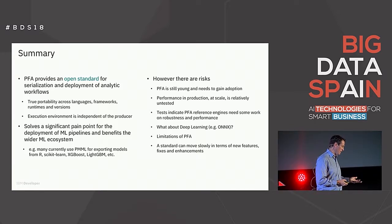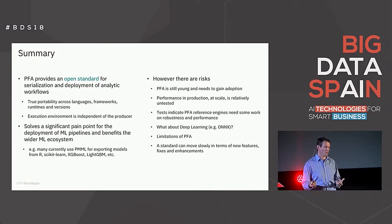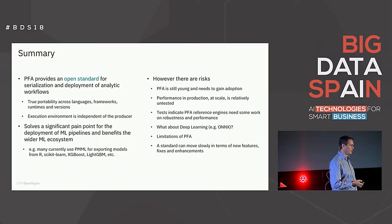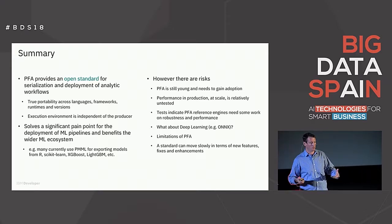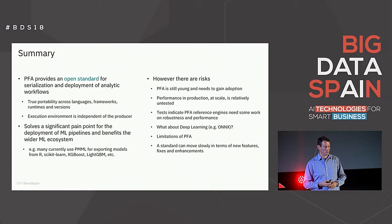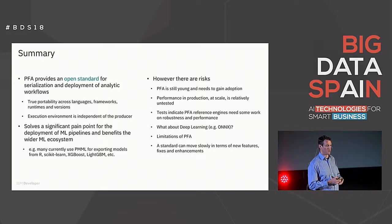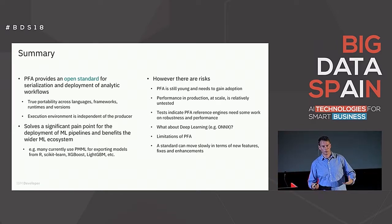In summary, PFA provides an open standard for model deployment, for serialization of analytic workflows, with true portability across languages, runtimes, and frameworks — decoupling the model producer from the model consumer. As such, it solves a significant pain point in the machine learning community, starting with Spark ML but applying to scikit-learn, XGBoost, LightGBM, and all the others. But there are still risks: PFA is a young standard, still gaining adoption, production at scale has not really been tested, and there are open questions around performance. Can the scoring engine be optimized for PFA? What about deep learning? There's no technical reason it can't be extended to support deep learning — it's just not in the spec yet, and it's a significant amount of work. And a standard can move really slowly and is kind of designed by committee, making it difficult to change once released.